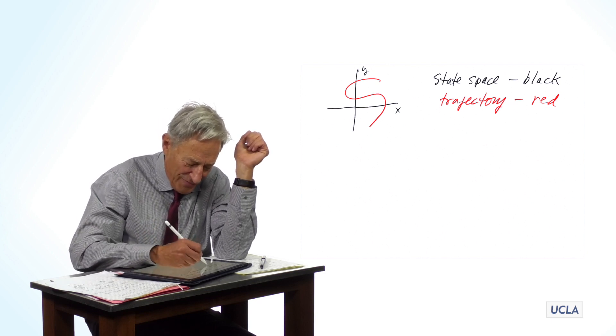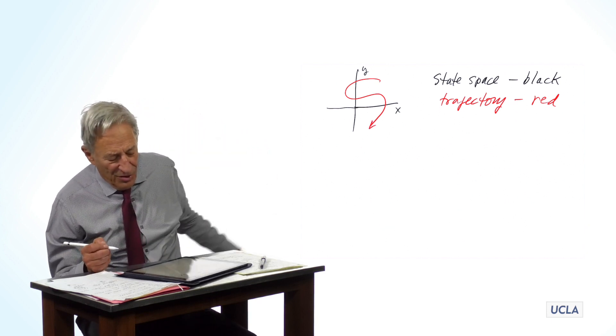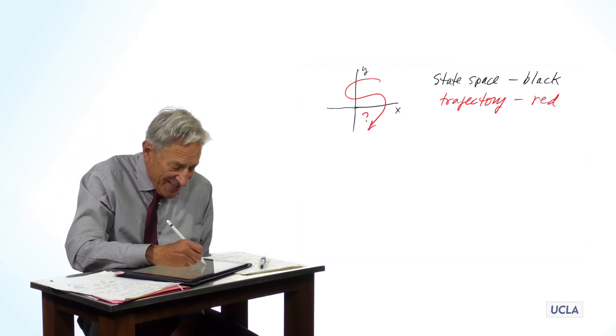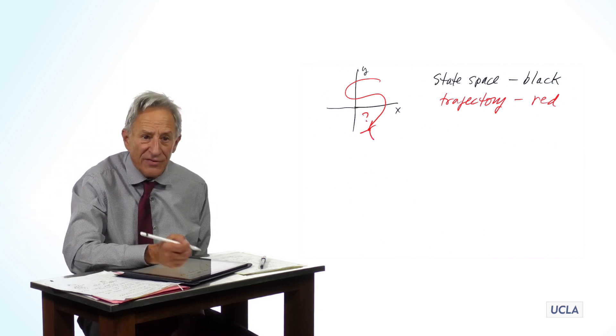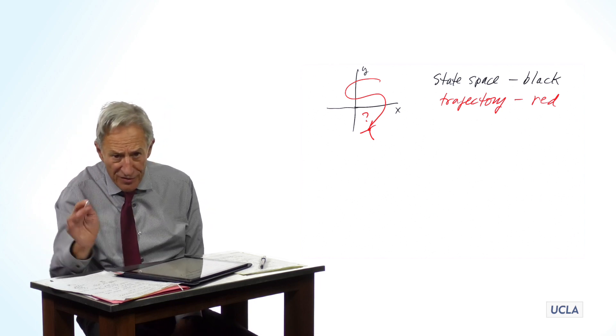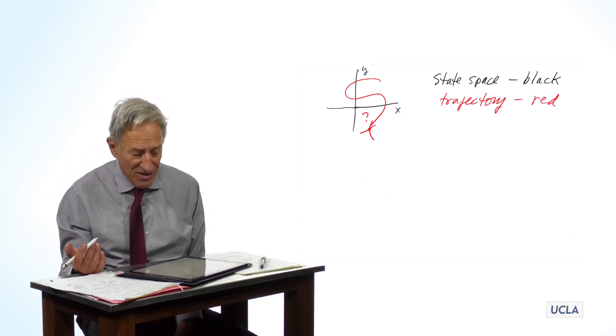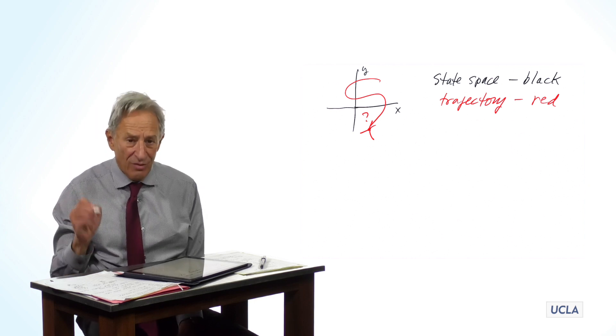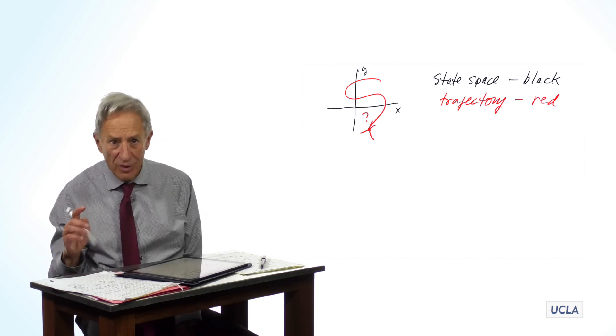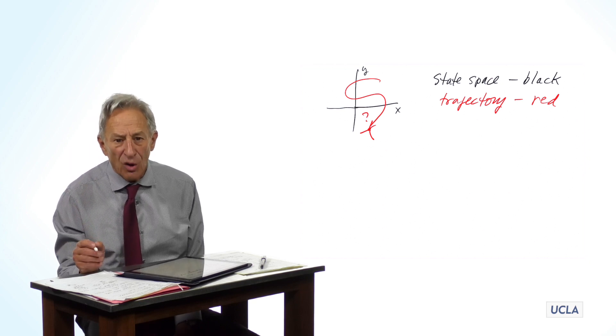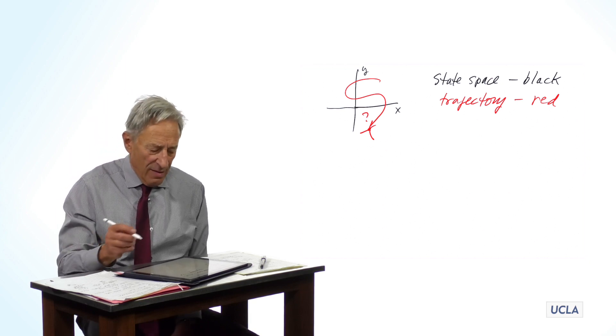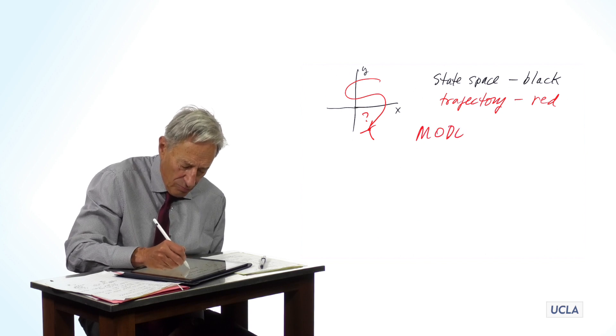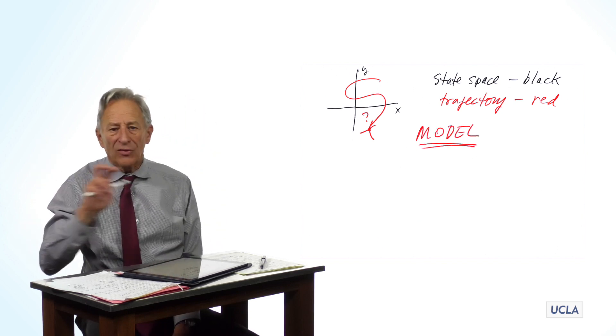And here comes the first one. So the question is, we asked this question before. We said, what makes this state point go to the left rather than to the right? What gives the curve the shape that it has? And at that point, we didn't have an answer. We're now going to answer that question. What tells the state point where to go. And the answer is the model.